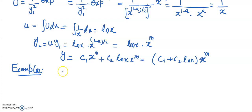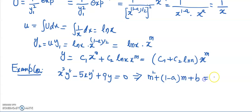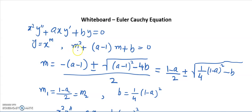Let us take a particular example. Suppose the equation is x²y'' − 5xy' + 9y = 0. This is an Euler-Cauchy equation. The characteristic equation is m² + (a−1)m + b = 0.